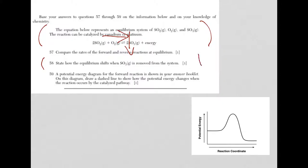It's always TTAA: take towards, add away. So if I take away, in this case SO3, the equilibrium shifts towards that side. If I were to add SO3, it would shift away to the other side. So again, the answer for 58 is that the equilibrium will shift to the right.